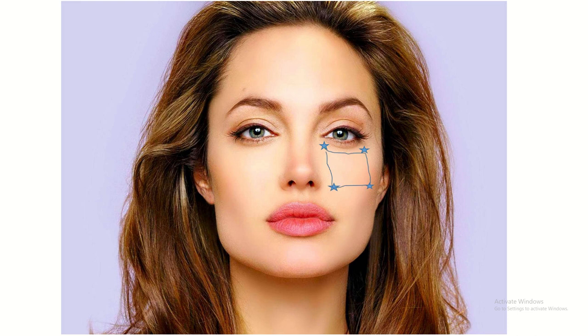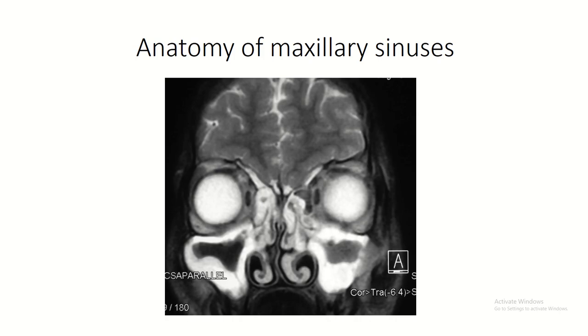Now let's draw the sinus on a face: first point, second point, third point, fourth point — and join this line. This is the maxillary sinus.